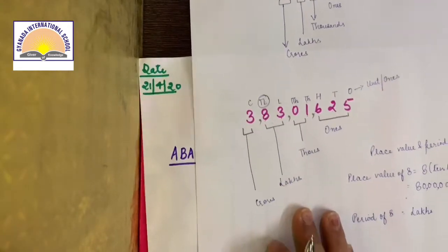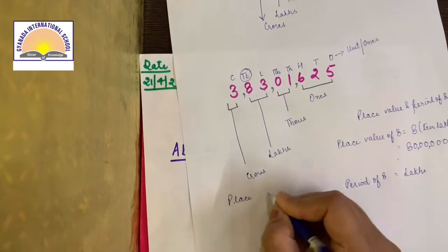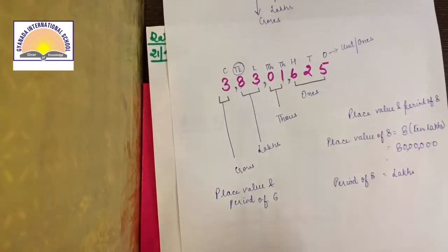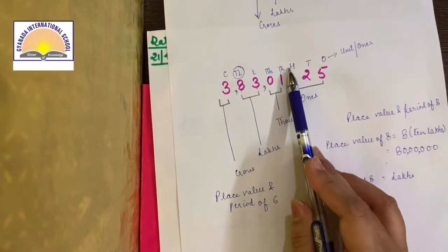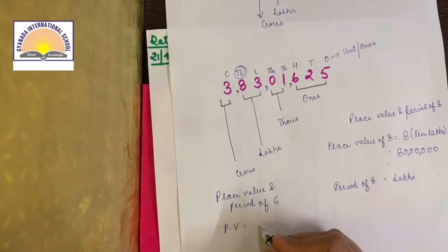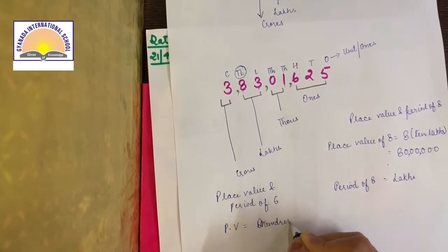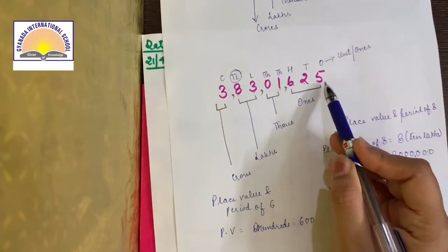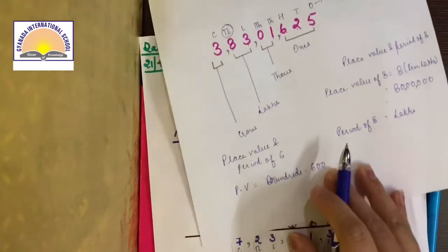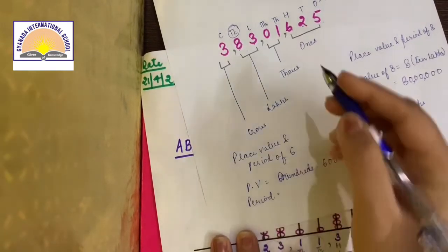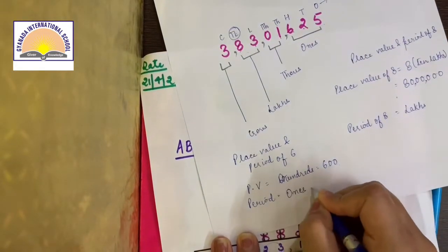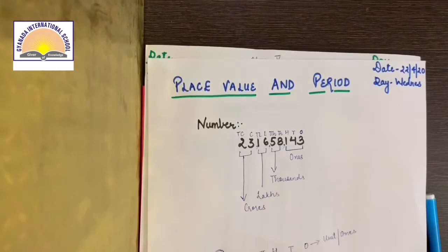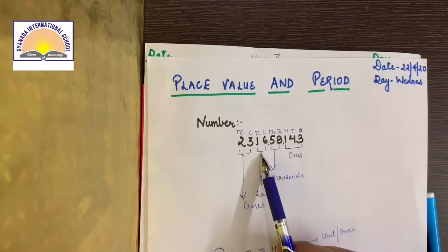Ek aur example lete hain. Like you have to tell me the place value and period of six. Tell me in this question what is the place value of six here? It is hundred. So the place value is hundreds, six hundreds. And how do we write six hundred? Six double zero. Or you can count digits after six. It is two. Then there will be two zeros. Six hundreds is the place value. And what will be its period? Kaunse period ko belong kar raha hai? Ones. The period of six is ones. Understood? It is very easy. Place value and period. Period ke naam kya hain? Ones, thousand, lakhs, crores.